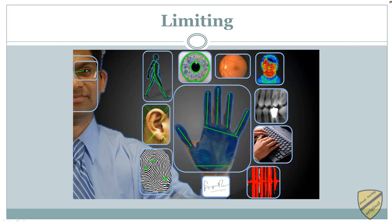The next principle is limiting. Limiting access to information reduces the threat against it. Only those who must use the data should have access to it. The amount of access granted should be limited to what that person needs to know. Some ways of limiting are technology-based while others are procedural or policy-based. In this graphic we see biometric things — looking at a person's gait and handprint to authenticate them. Once authenticated, you ensure they only get access to the data resources they need. When you pull your car in the garage at night, you're limiting the access attackers have to break into it.